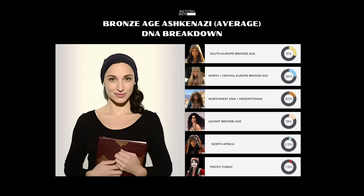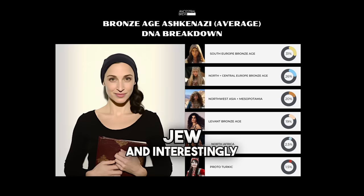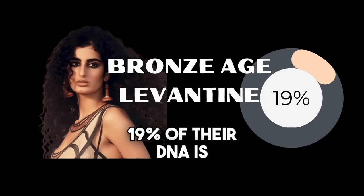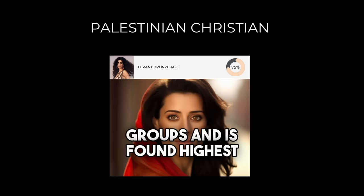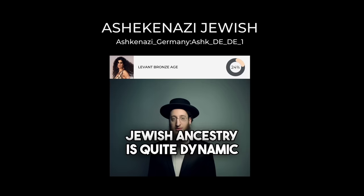Here I have a Bronze Age DNA breakdown of the average Ashkenazi Jew, and interestingly, around 19% of their DNA is Bronze Age Levantine derived. This DNA component is characteristic of Bronze Age Levantine groups and is found highest in Christian populations of the Levant. However, it is important to consider that Ashkenazi Jewish ancestry is quite dynamic, with some individuals having both lower and higher levels of Levantine ancestry.